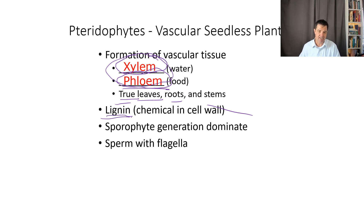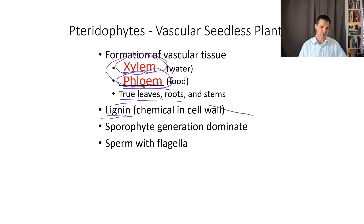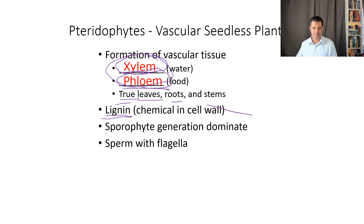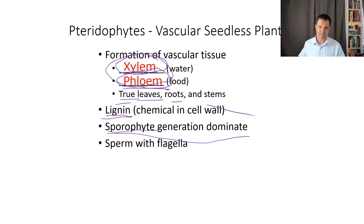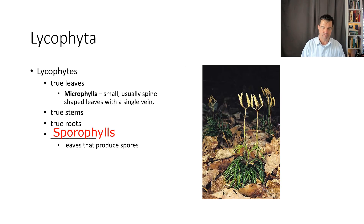They also have lignin, which is probably new to us here. That's a chemical found in the cell wall in addition to cellulose. The lignin helps cells that are lignified — that cell wall is even tougher. Lignin is a carbohydrate-like chemical that links more of the cell wall together and makes it tougher. Sporophyte generation dominant means that most of what you see in the plant is diploid — most of it will be 2N. They also have sperm with flagella that allow it to move from one place to another.